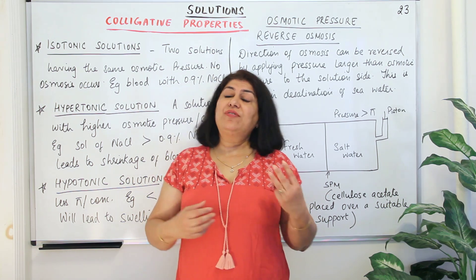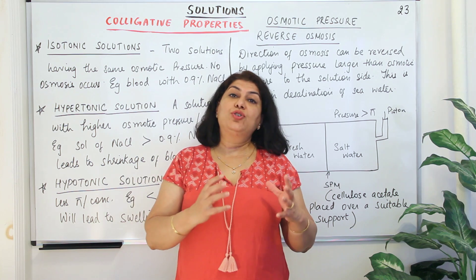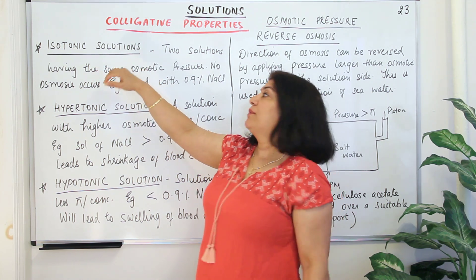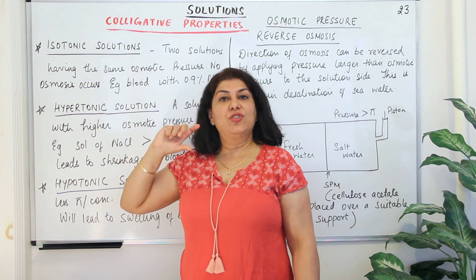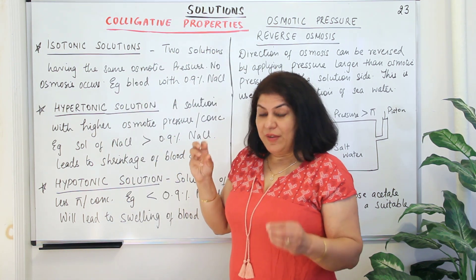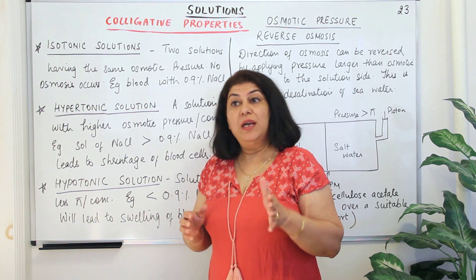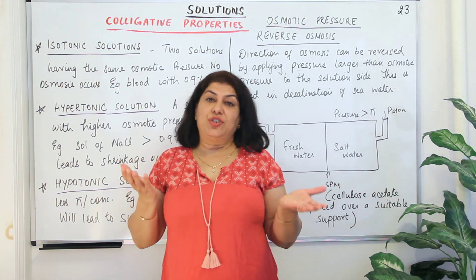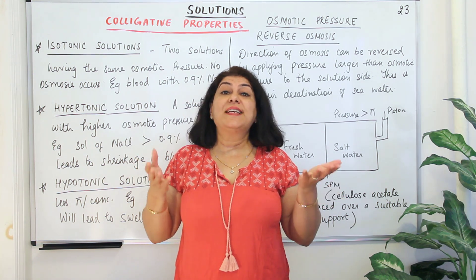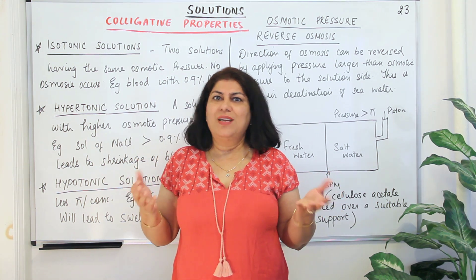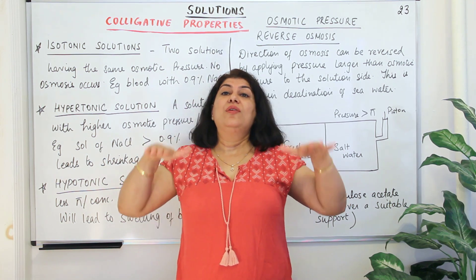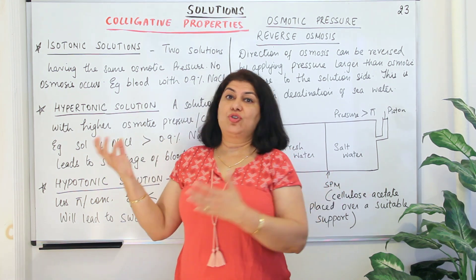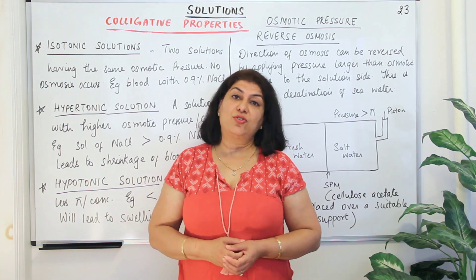Based on this, we have three categories of pairs of solutions according to how osmosis would occur. The first category is isotonic solutions. Iso means the same and tonic is for osmotic pressure. When you have two solutions across the semi-permeable membrane which have the same osmotic pressure, they are said to be isotonic solutions. When the concentrations or the osmotic pressures of both solutions are equal, neither will move towards the other, and therefore osmosis does not occur.